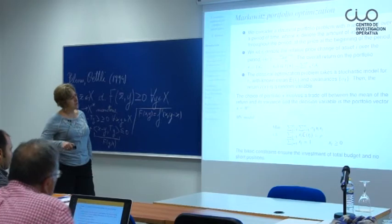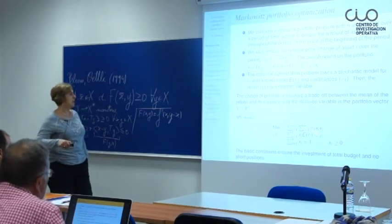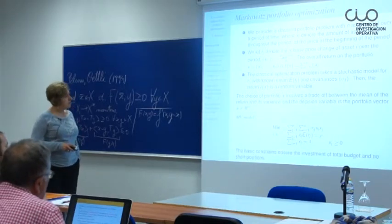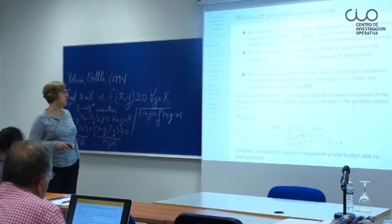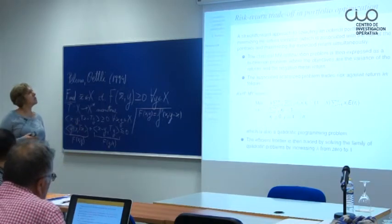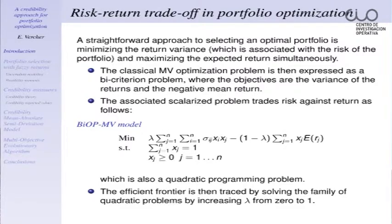The return has to be at least equal to a certain quantity, and we want to minimize the variance. The basic constraints ensure investment of the total budget and no short positions are assumed. A straightforward approach to selecting the optimal portfolio is also suggested by Markowitz: this bi-criterion problem and the associated scalarization problem traces risk against return, and the efficient frontier is traced by assigning different values for lambda.